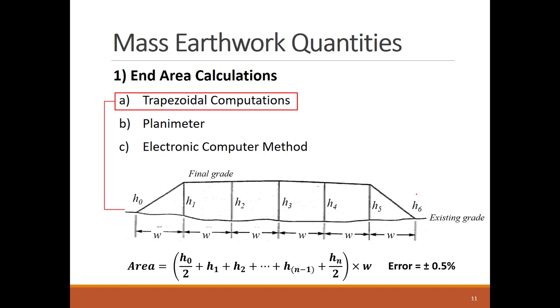The shown example has six w intervals and six cross-sectional trapezoids. The slope toe heights, H0 and H6, equal zero in this example.